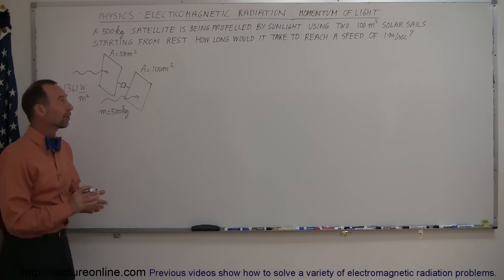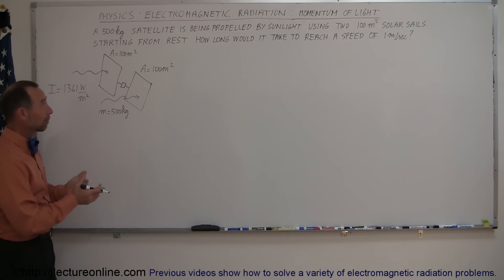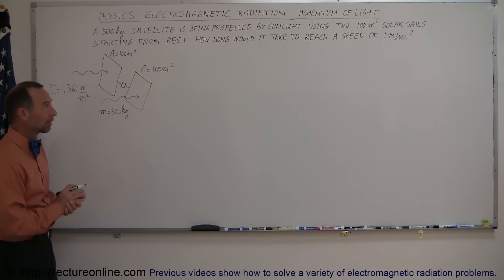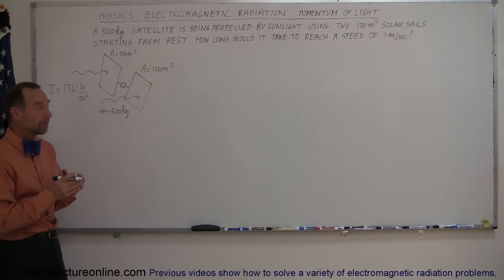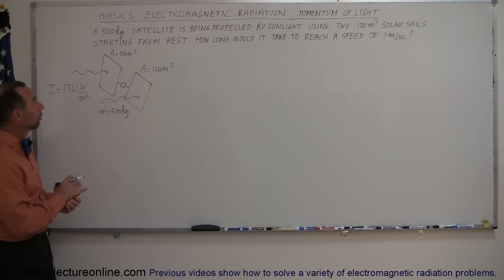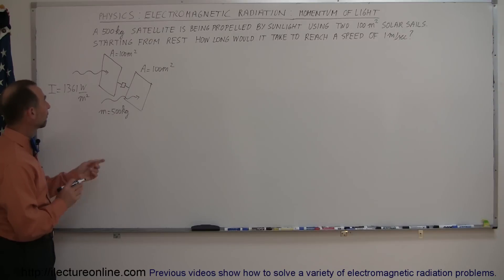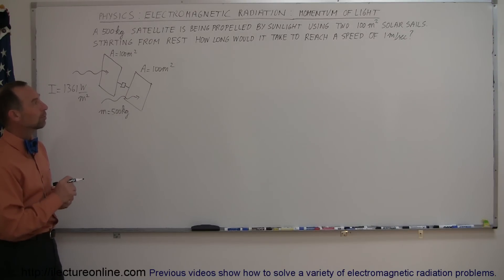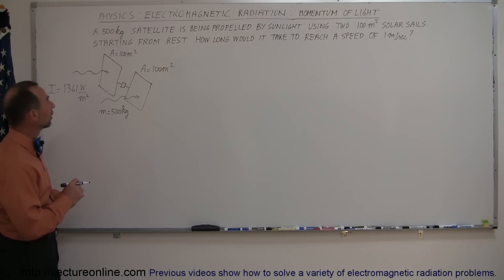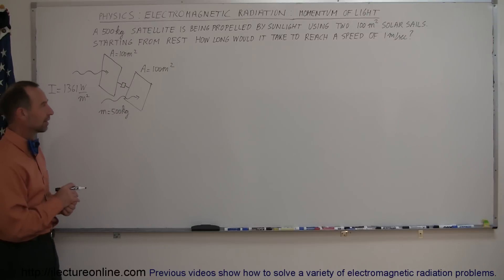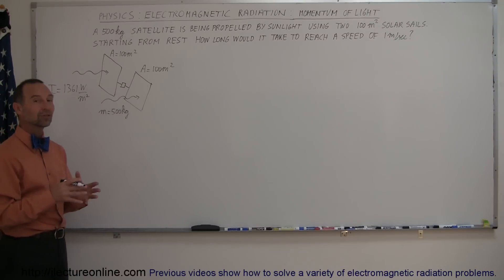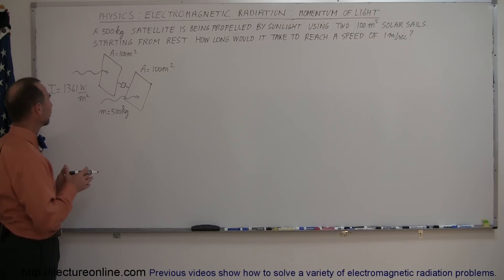Welcome to iLectra Online. Here's another example of how to work with problems dealing with electromagnetic radiation. In this case we're going to look at the momentum of light — and yes, light has momentum even though it doesn't have any mass. The problem reads: we have a 500 kilogram satellite being propelled by sunlight using two 100 square meter solar sails. Starting from rest, how long would it take to reach a speed of one meter per second? The fuel is absolutely free — we're going to use sunlight.